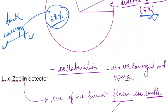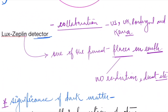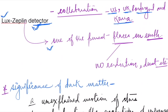Now, the LUX-ZEPLIN detector: this is an underground setup in the USA, a collaboration of the US, UK, Portugal, and South Korea. It is kept underground because detecting dark matter requires a noiseless environment, as the signals are very weak. Any surrounding noise would hinder the detection process. That is why it is also called one of the purest places on Earth — no radiation, no dust.